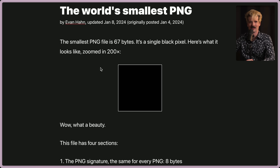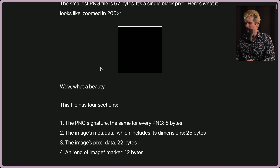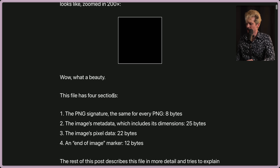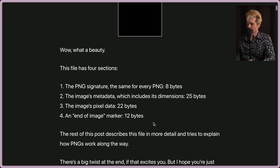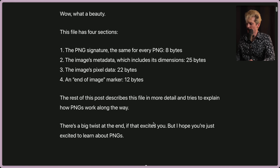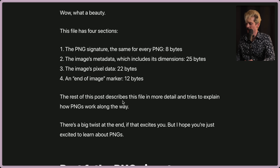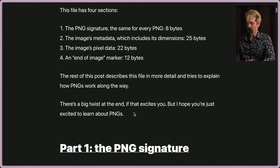Hopefully as we look through this, we'll learn a bit about how PNGs work. This file has four sections: one, the PNG signature — the same for every PNG — 8 bytes. Two, the image's metadata which includes its dimensions, just 25 bytes. Three, the image's pixel data, just 22 bytes. And four, an end of image marker, which is 12 bytes. There's a big twist at the end, but I hope you're just excited to learn about PNGs. So let's dive in.